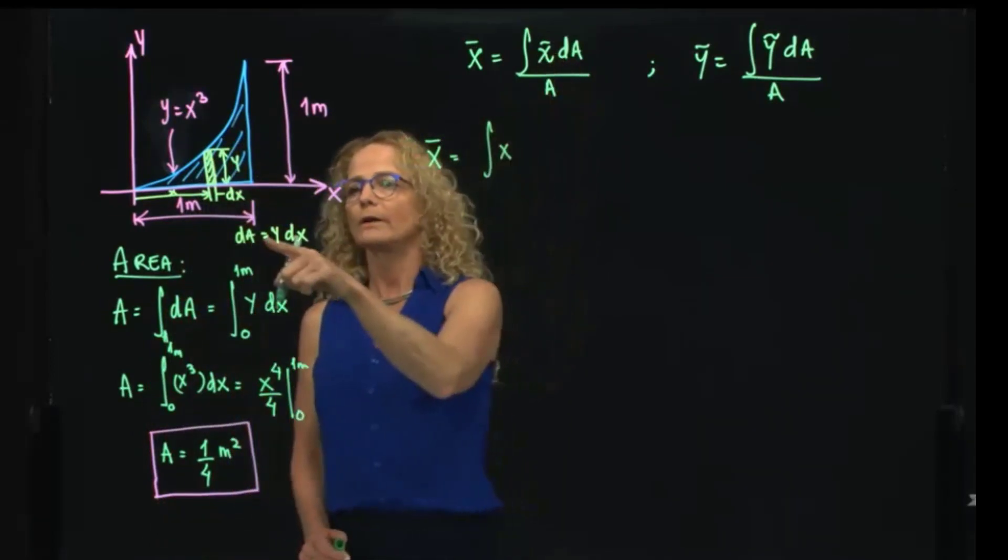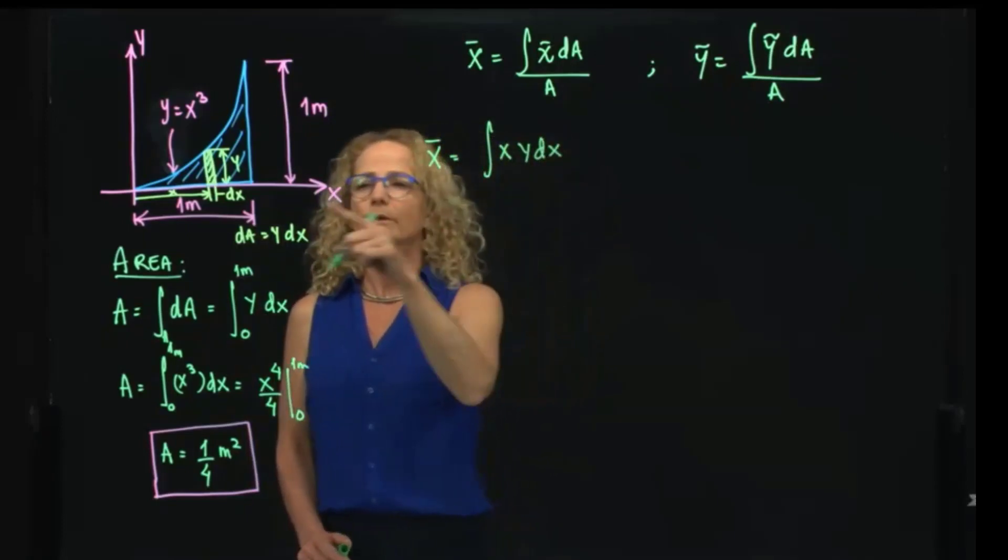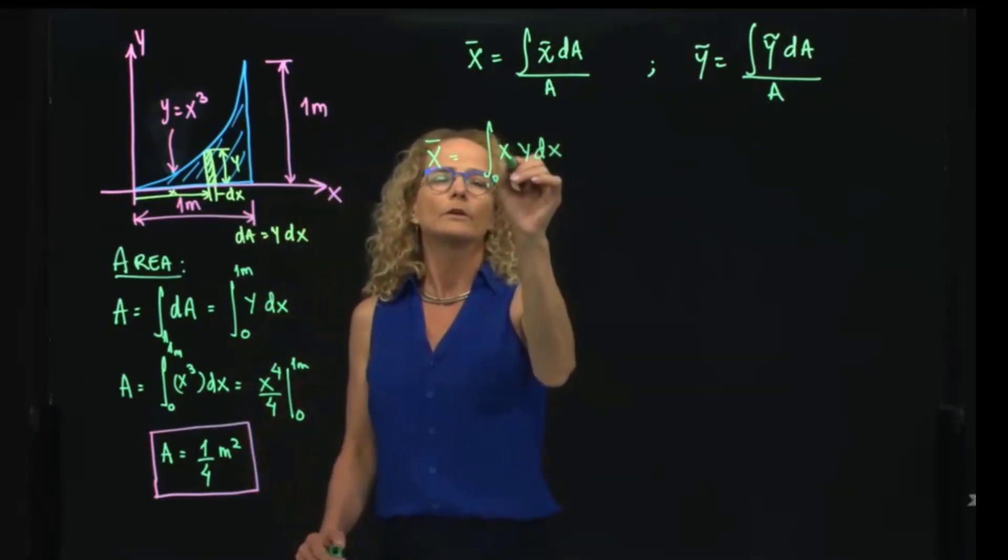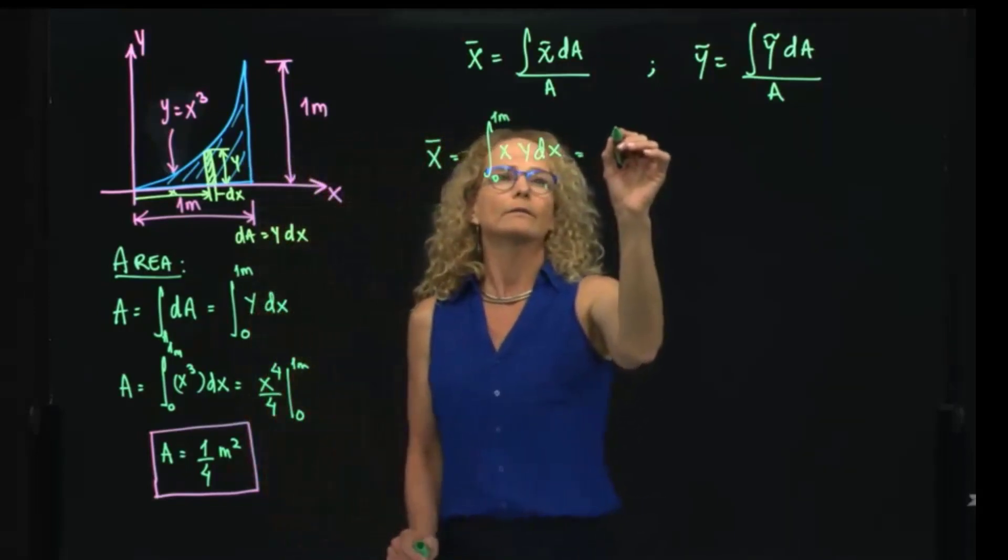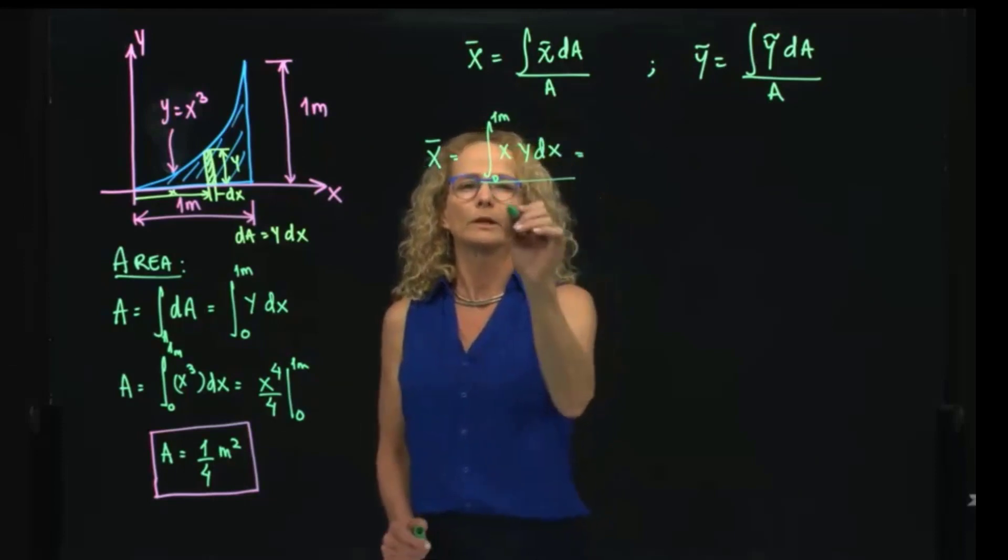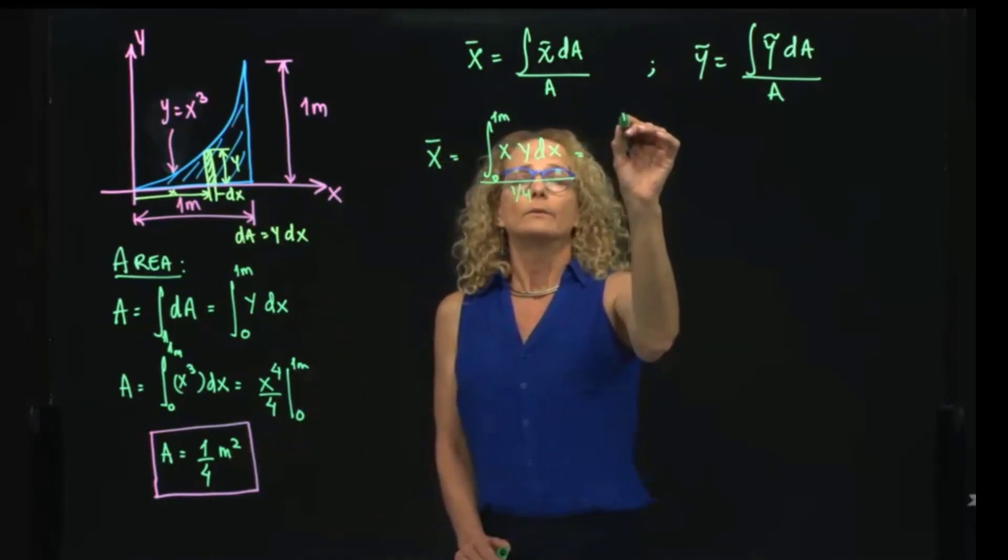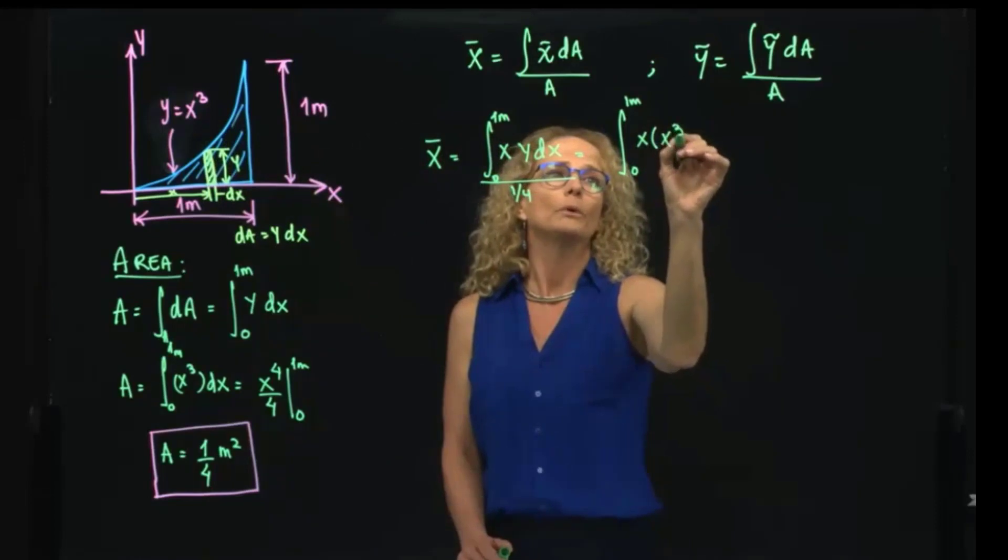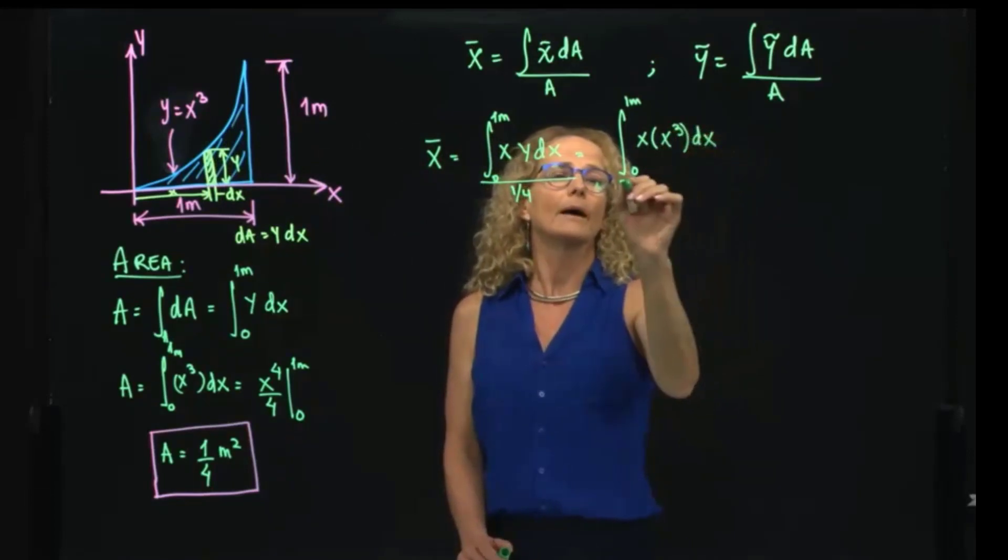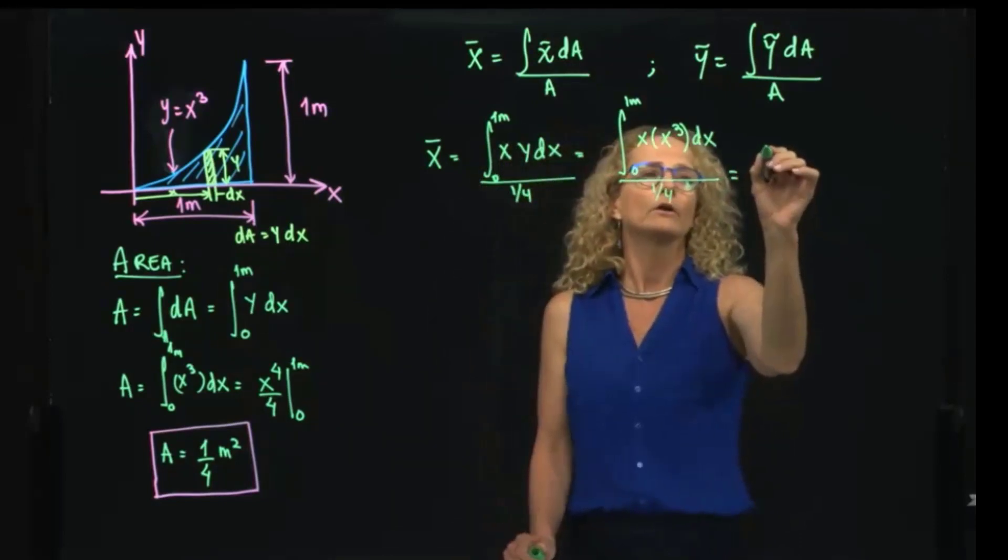And the differential of area, we already say that is y dx. And the limits of integrations are for x from 0 to 1 meter. And I have to put y in terms of x, and that, of course, divided by my total area, which is 1 fourth. And then this equals 0 to 1 meter x, and y equals x cubed dx divided by 1 over 4, which is the same as writing 4.